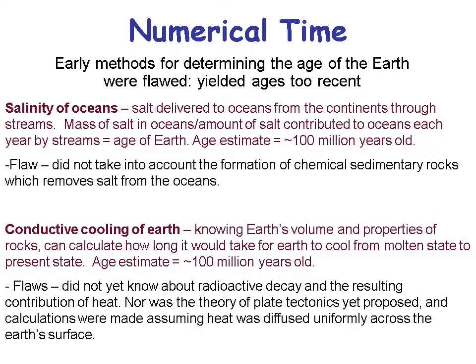Early methods for determining the age of the Earth were flawed — they yielded ages that were too recent. One method used the salinity of the oceans: measure how much salt is delivered to the ocean from the continents through streams, then estimate the Earth's age. The flaw is that it didn't account for the formation of chemical sedimentary rocks, which remove salt from the oceans. You can go to Kansas and find salt deposits under the sediments, and oil is commonly trapped under salt deposits in places like the Gulf of Mexico.